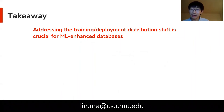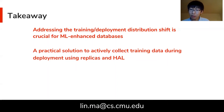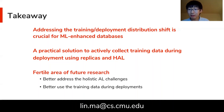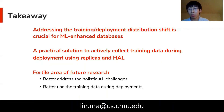To summarize, we contend that addressing the training and deployment data distribution shift problem is crucial to productionizing machine learning systems. We present a practical solution to actively collect training data during deployments using replicas and a holistic active learning strategy. We also think there's a fertile area of future research to better address holistic AL challenges or better use training data during deployments — such as adjusting training weights of actively collected labels or combining additional labels to train a larger global model. You're welcome to reach out for feedback or discussion. I'm happy to answer questions.